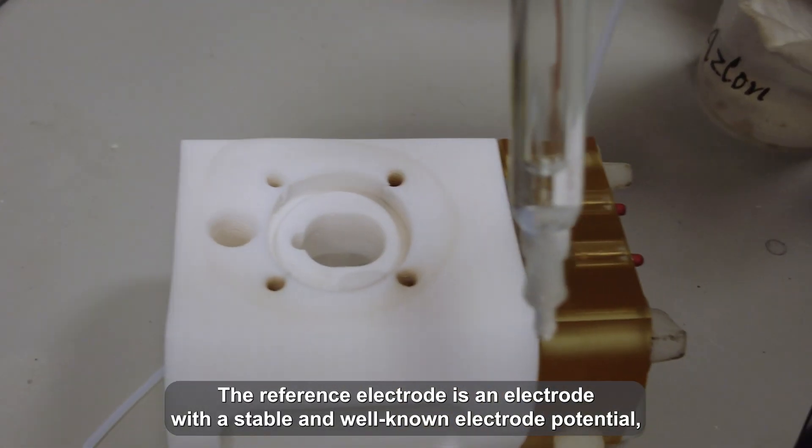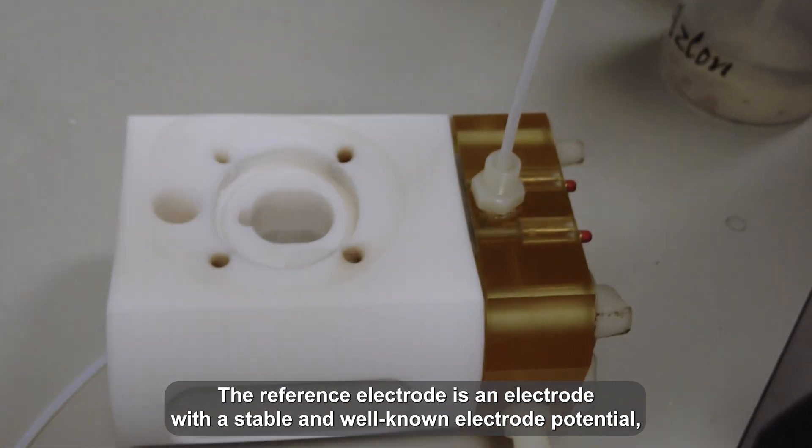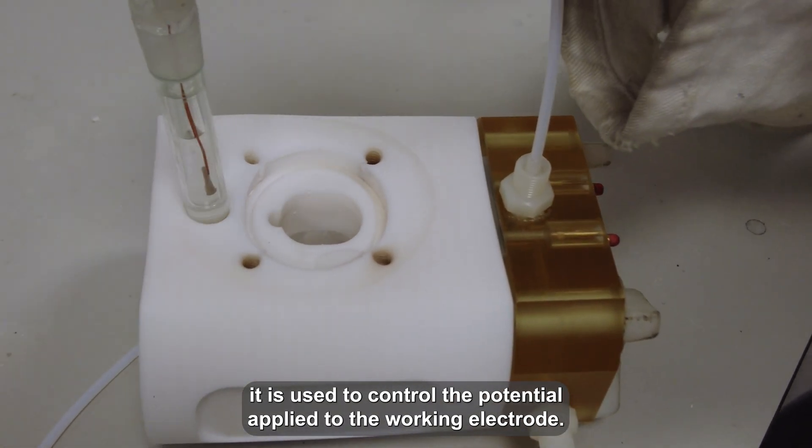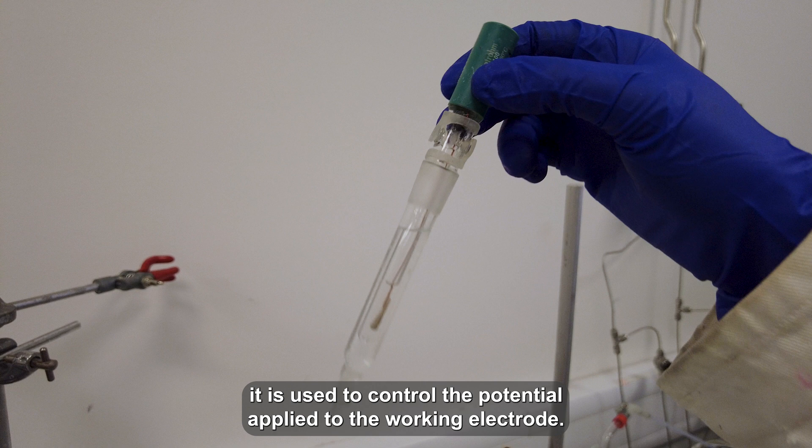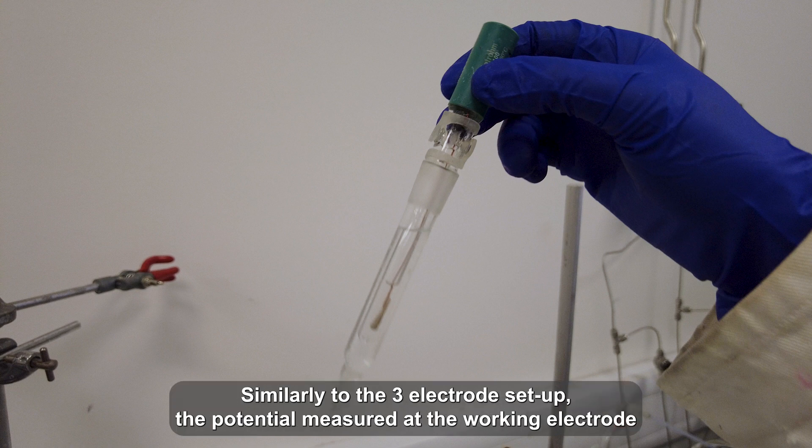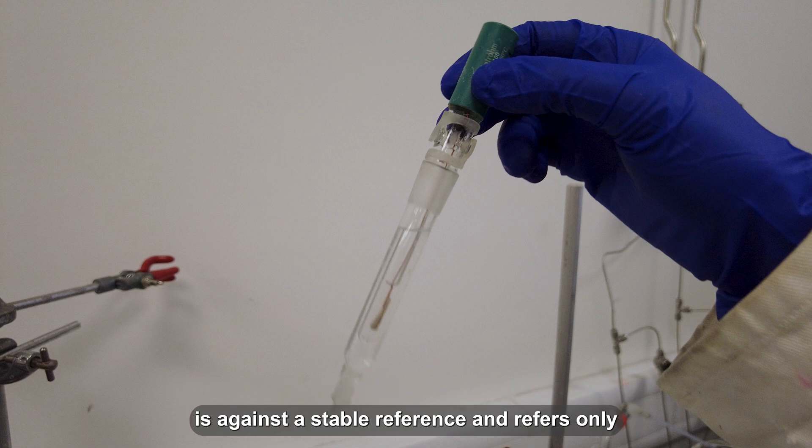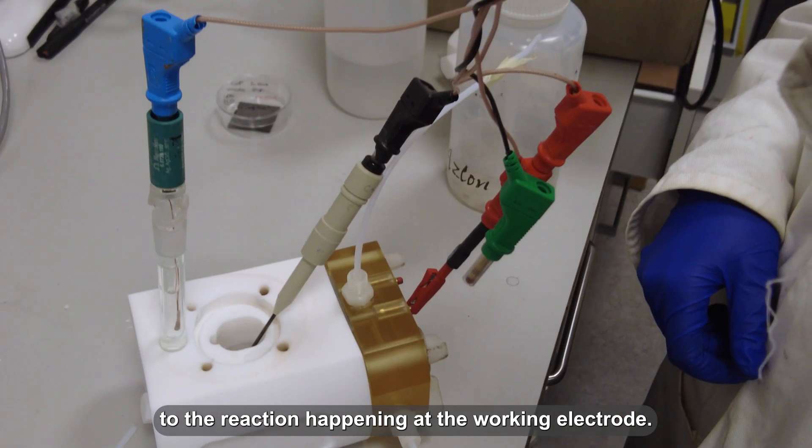The reference electrode is an electrode of stable and well-known electrode potential. It is used to control the potential applied to the working electrode. Similarly to the three-electrode setup, the potential measured at the working electrode is against the stable reference and refers only to the reaction happening at the working electrode.